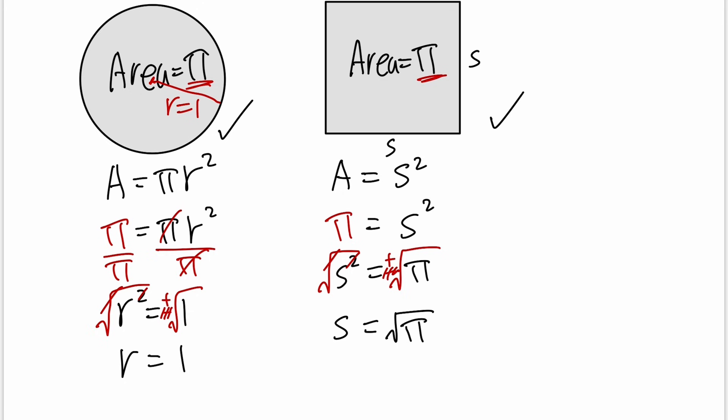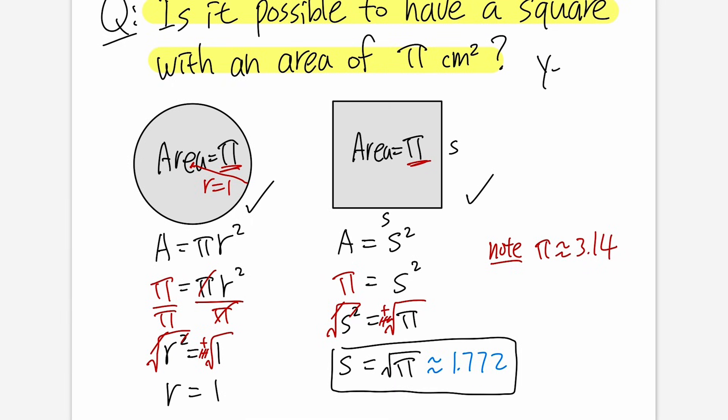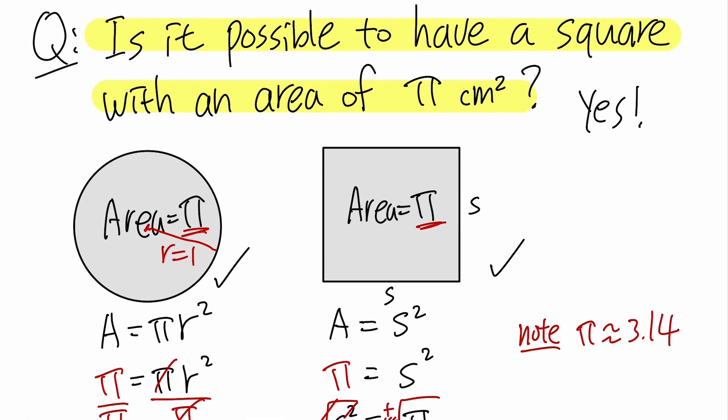All right, let me just give you guys an idea of how big this number is. Square root of π is approximately 1.772, right? So if we can have this then we'll be done. And of course let me also make a note that π is approximately 3.1415926 and so on. So to answer this question, is it possible? Yes. Do you see it often? No. That's it.